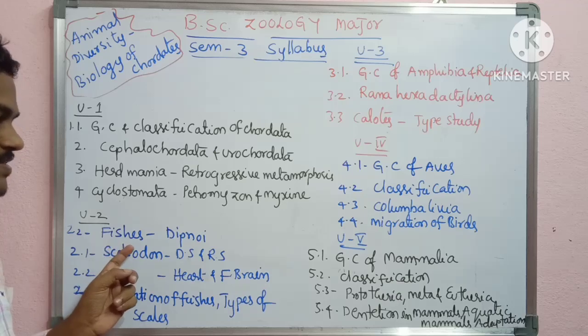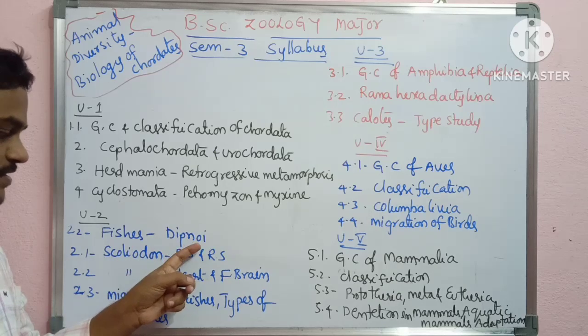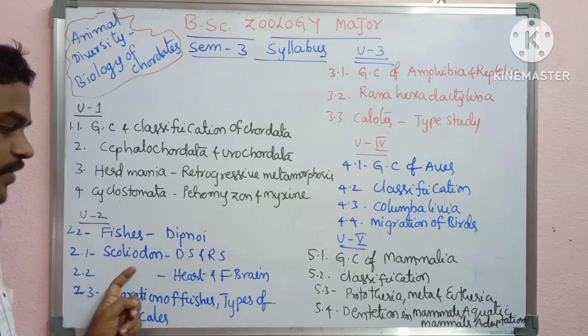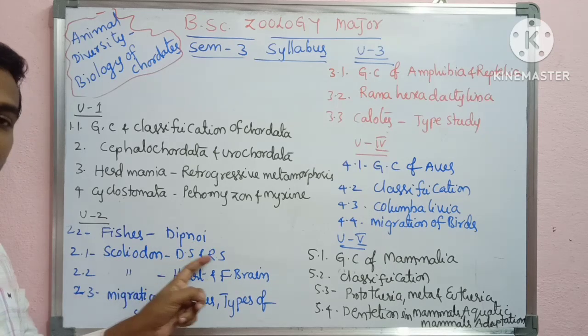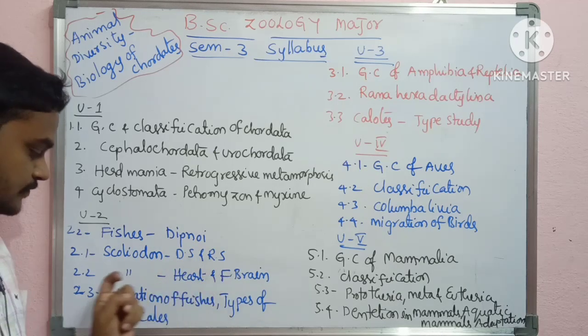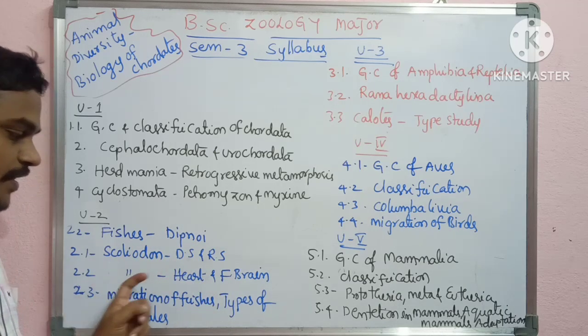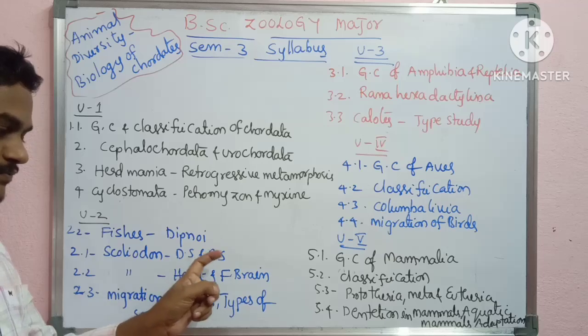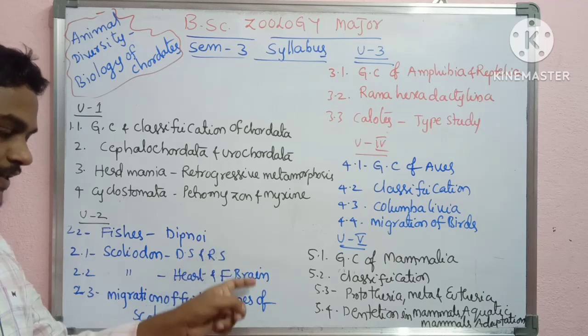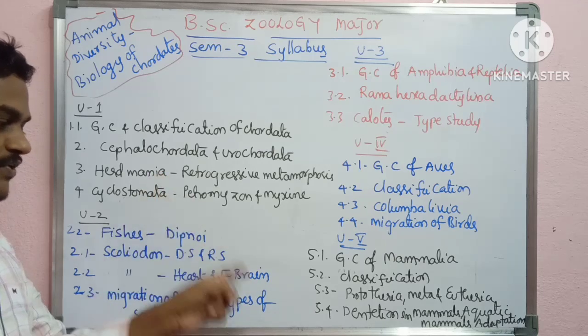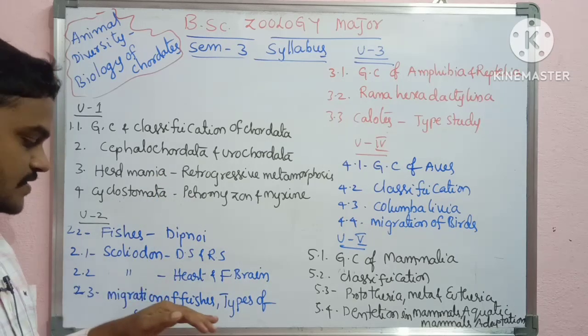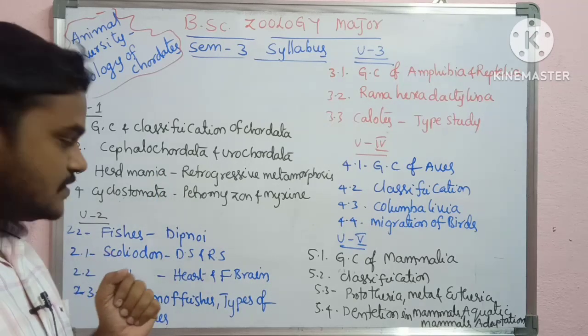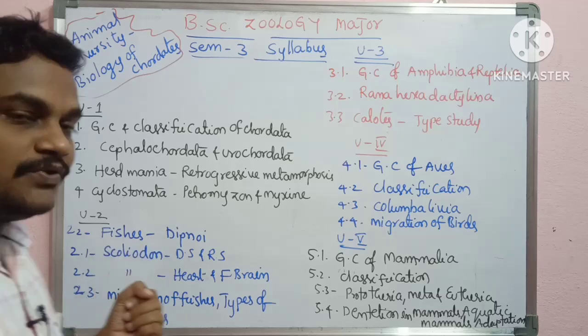Unit 2 covers fishes. Topics include Dipnoi fishes, skeletal and digestive systems, and respiratory system. Then the skeletal and heart function, fish brain, migration of fishes, and types of scales.